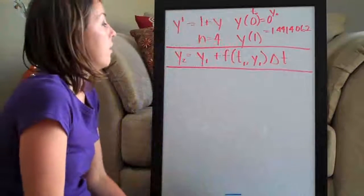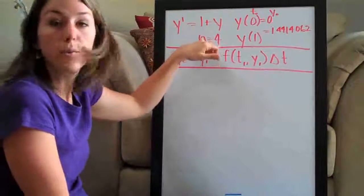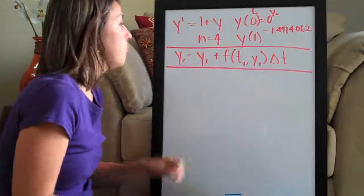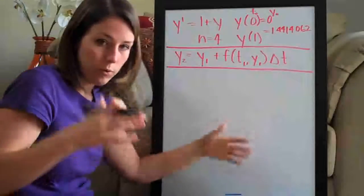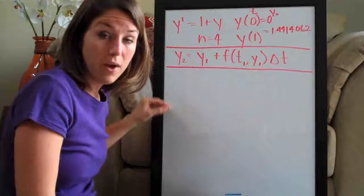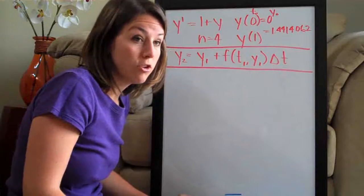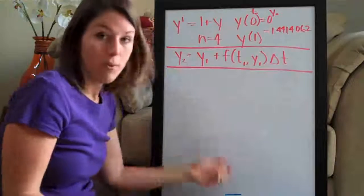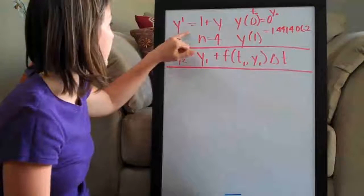One thing to note, the more steps you take, for example, if this had been n equals 8, the closer your approximation is going to be. So don't be surprised if you're using n equals 2 or n equals 4 and you have to go between 1 and 0. If this answer is a little bit different than the answer that you get when you actually solve the problem and plug in the point, they shouldn't be too different though. If you're getting 10 versus 20, then you might want to go back and check your work.